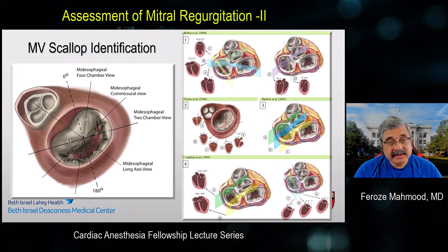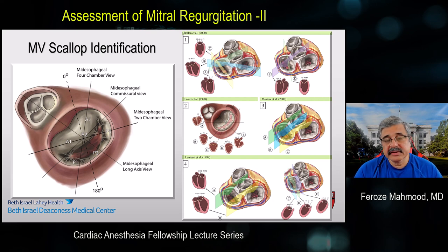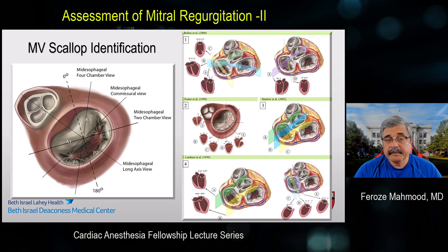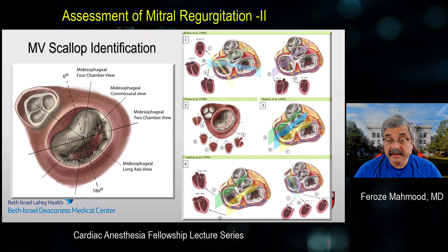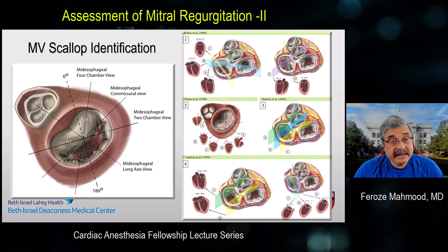There are numerous systems of classification and identification of mitral leaflets. The ASE guidelines are based on two-dimensional imaging, relating to specific probe positions and scan plane rotations for identification of mitral valve scallops. Other investigators — such as Bolin et al., Foster, Lambert, and Maslow — have put forward their own systems. The purpose here is simply to highlight that identification of mitral valve anatomy, specifically in relation to various scallops and leaflets, is an important aspect of MR assessment, and every echocardiographer should have detailed knowledge of mitral leaflet anatomy.